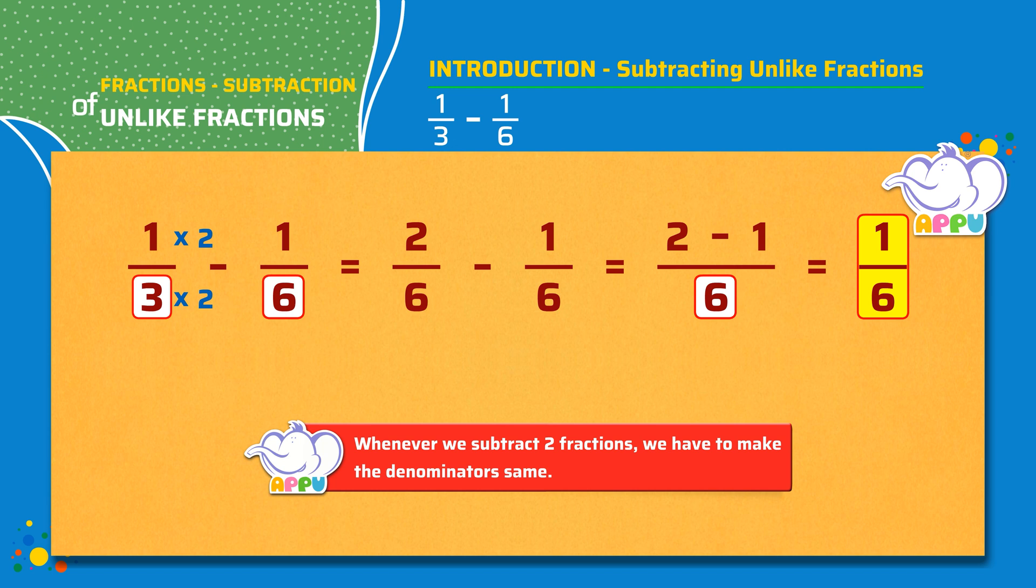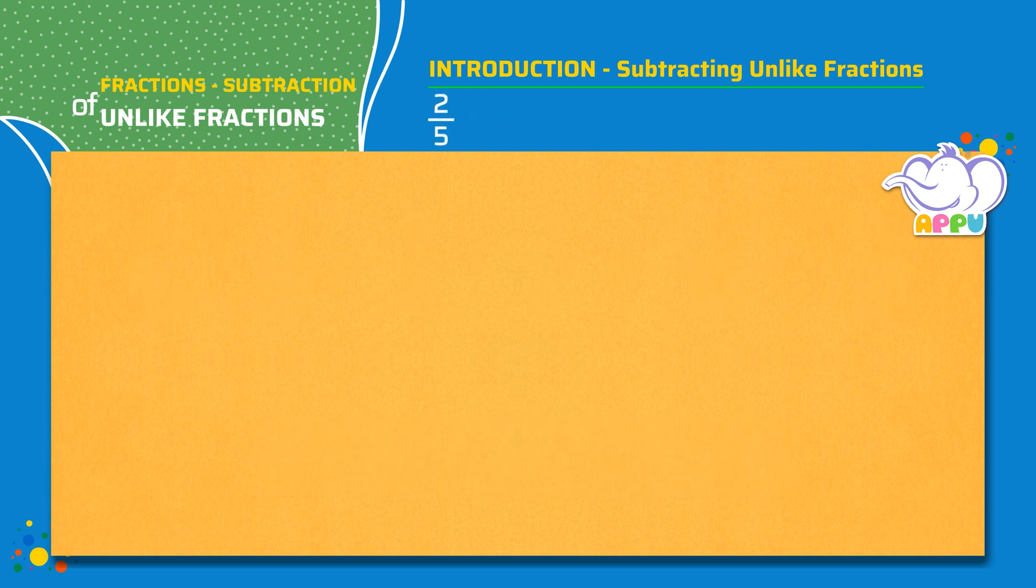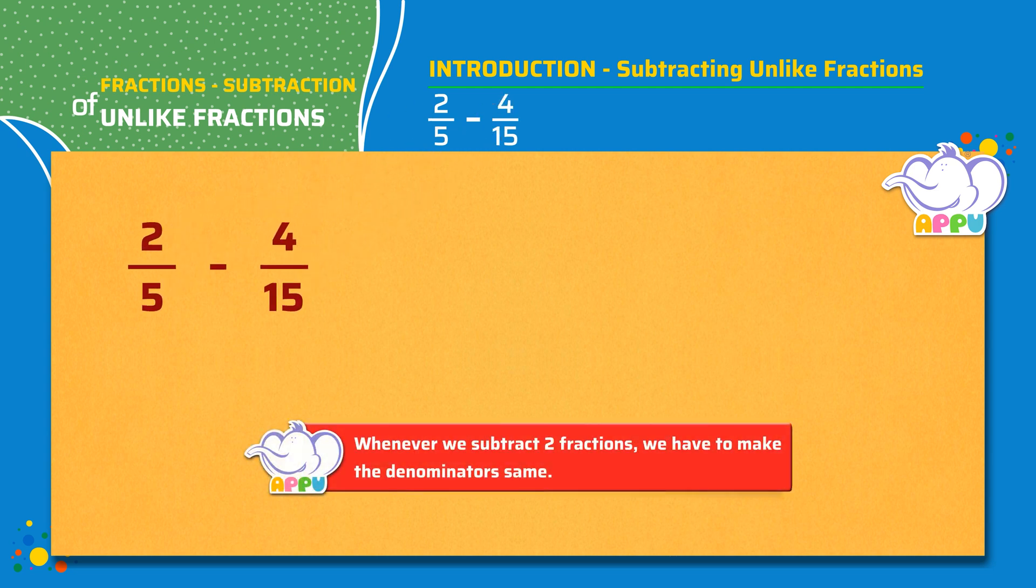Let's see another example. 2 by 5 minus 4 by 15. We see that the denominators are not the same for both the fractions, but 15 is a multiple of 5. So to change the denominator from 5 to 15, we have to multiply 5 with 3.